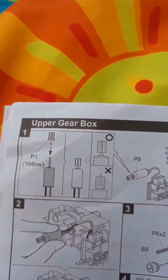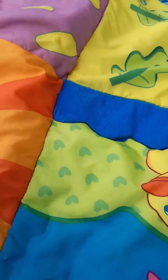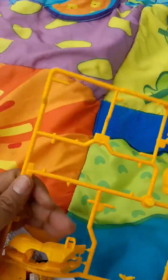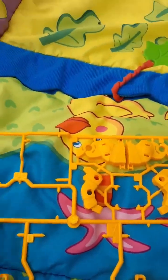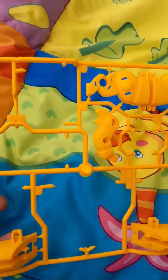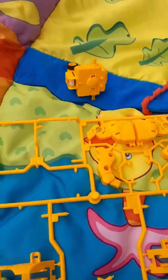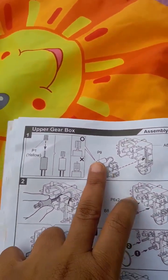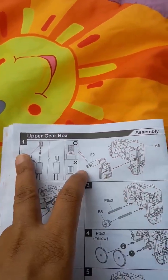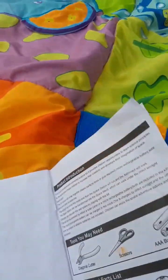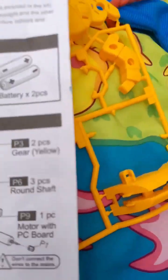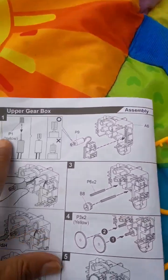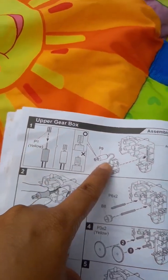We'll make the upper gear box. This part is the upper gear box. To make this part, take out the sixth number part A6 from this yellow board, and we need two mechanical parts: P9 and P1. P1 is a pinion gear and P9 is a motor with PC board. Place the pinion gear over the P9.